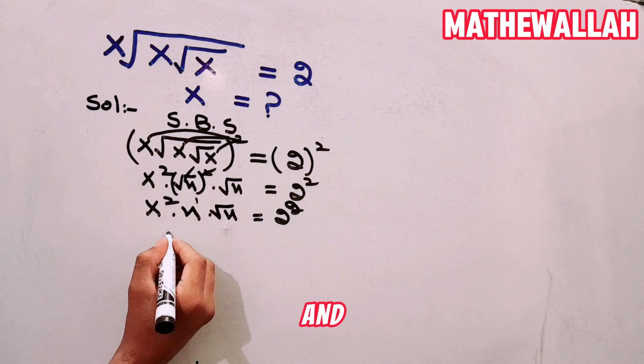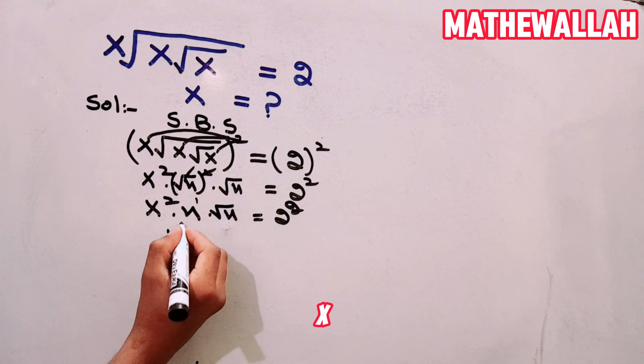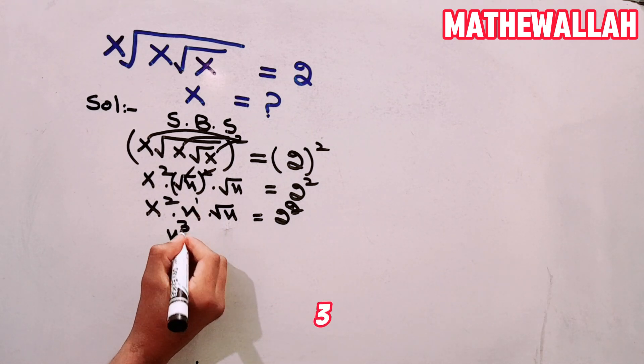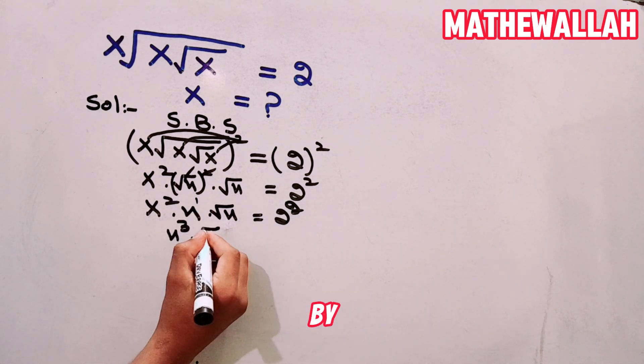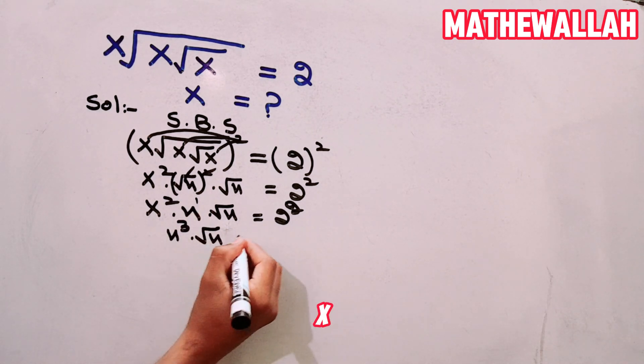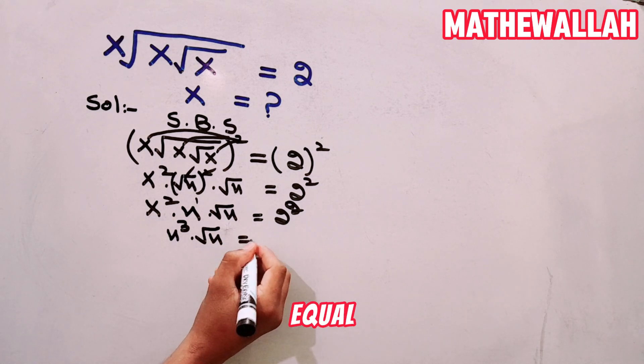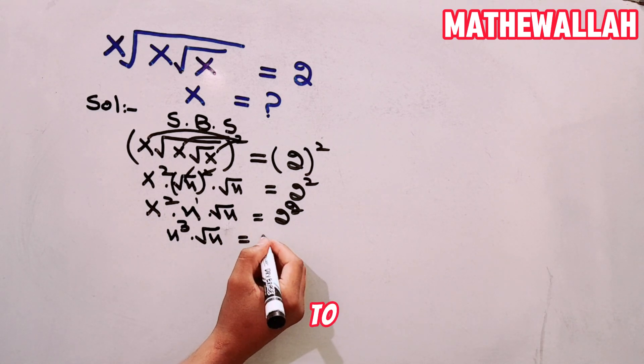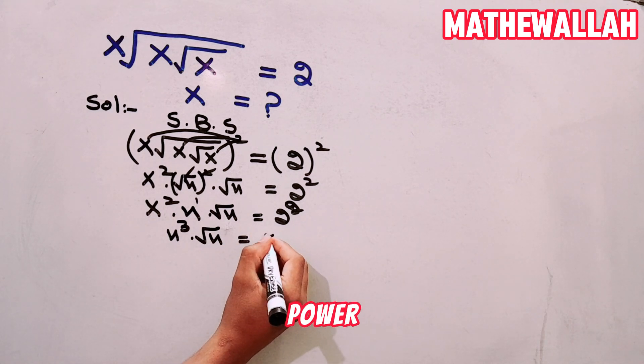Now x power 2 times x power 1 — we add the powers — it becomes x power 3, multiply by square root x, is equal to 2 to the power 2 squared.